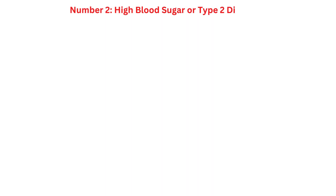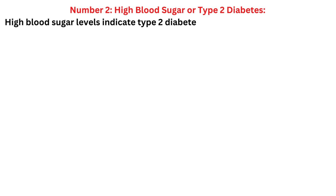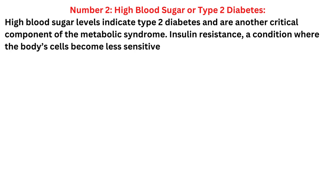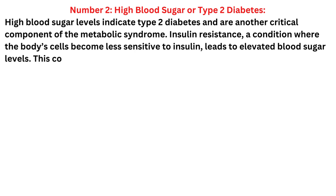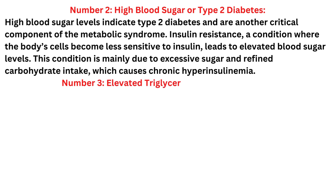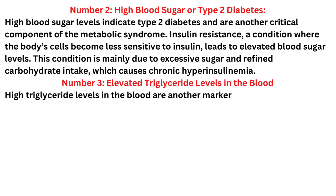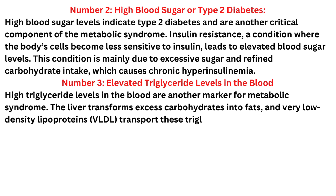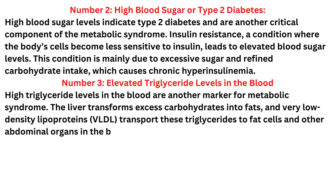Number two: high blood sugar or type 2 diabetes. High blood sugar levels indicate type 2 diabetes and are another critical component of metabolic syndrome. Insulin resistance — a condition where the body's cells become less sensitive to insulin — leads to elevated blood sugar levels. This condition is mainly due to excessive sugar and refined carbohydrate intake, which causes chronic hyperinsulinemia.